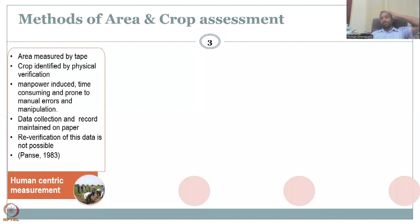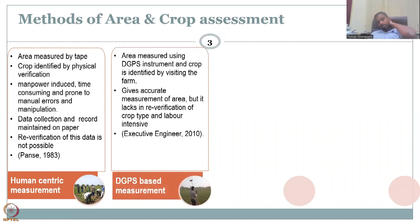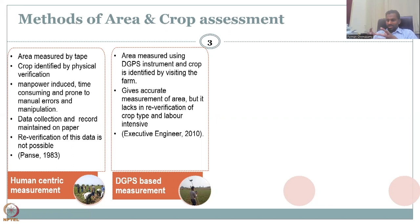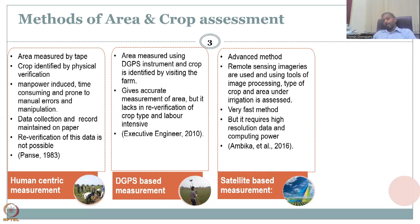We discussed the methods of area and crop assessment. In the past, human-centric approaches were used, where people would use a tape and scale to measure a particular area for a particular crop. Even now, people use physical methods — going out during flood season to estimate crop damage in an area, instead of using remote sensing data which is quick and approximately correct. There is also the DGPS method, using differential GPS measurements taken around a field.